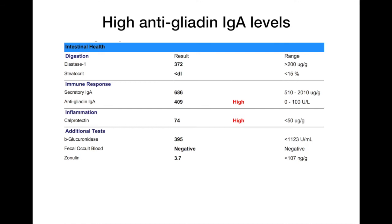Anti-gliadin antibodies are a sign that someone might have not just an immune response to gluten, but also possibly other grains. When you see levels of this high, you would trial a gluten-free diet for a month and reassess the symptoms. Calprotectin is an inflammatory marker, indicating that there's inflammation penetrating the mucosal membrane of the large intestine.